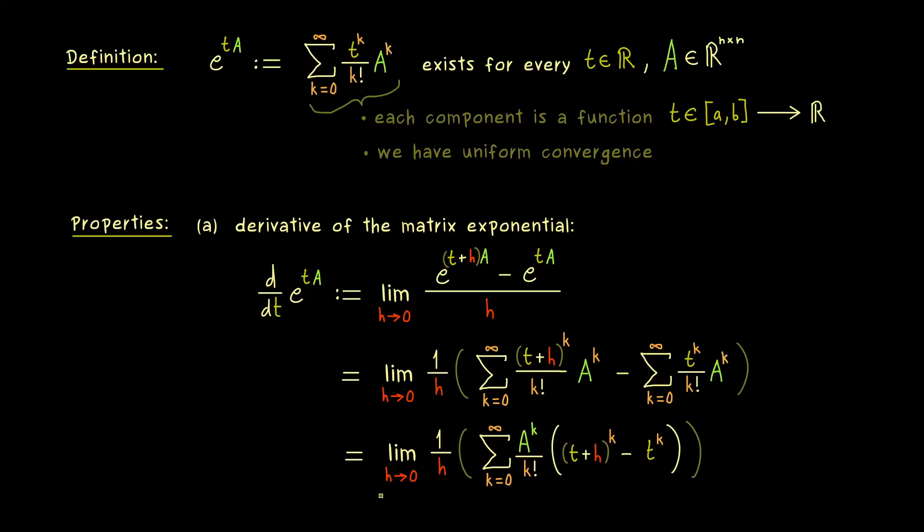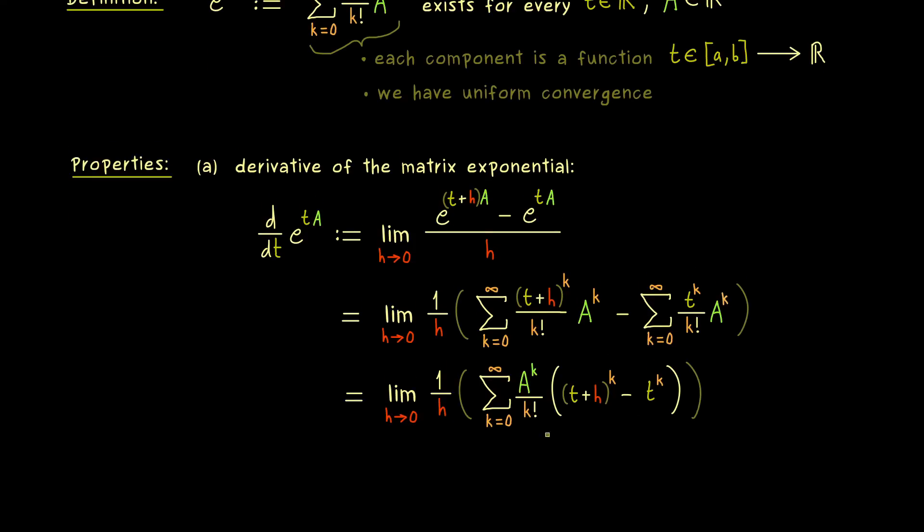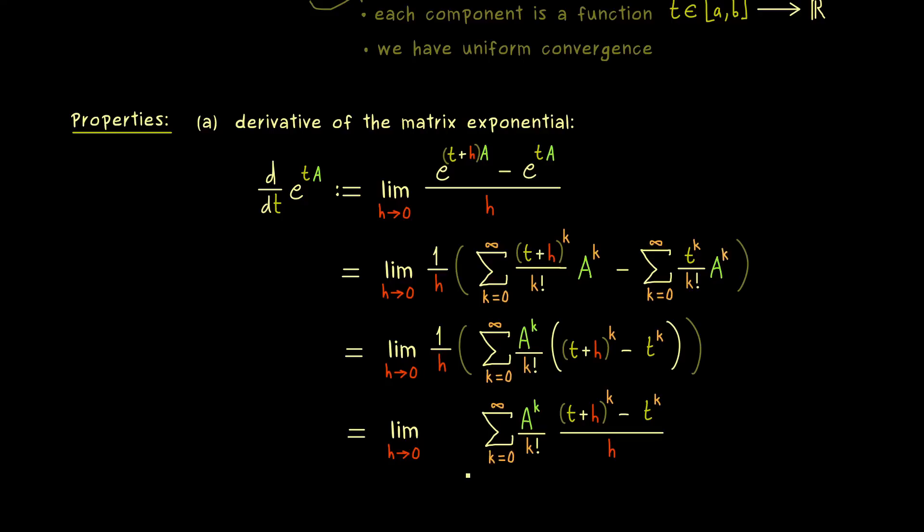And now you might already see what we actually want to do is to pull in this 1 over h and the limit h to 0. Obviously 1 over h is not a problem, but for the limit we need some requirement. Indeed, what is actually happening here is that we exchange two limit processes. In general this is not possible, we would get a different result, but for the uniform convergence we know that we can pull the limit in. So you can remember: exchanging the limit process here is allowed because we have the uniform convergence of the functions.